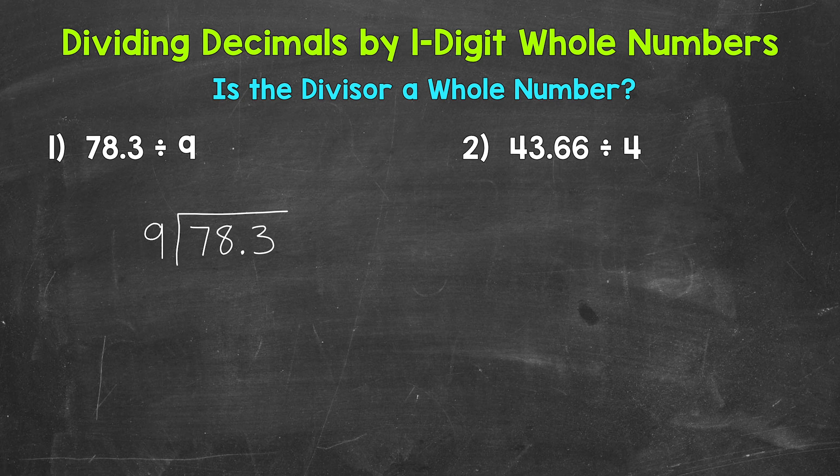9 is the divisor, the number we are dividing by. It always goes on the outside of the division bar. Now whenever we have a division problem involving decimals, we always need to check: Is the divisor a whole number?